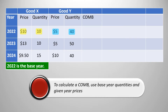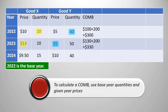Starting with 2022: Good X is 10 times 10 = $100. Good Y is 5 times 40 = $200. We add those together and the cost of our market basket for 2022 is $300. We make sure to use the base year quantities. So for 2024, it's $9.50 times 10 and 10 times 40.